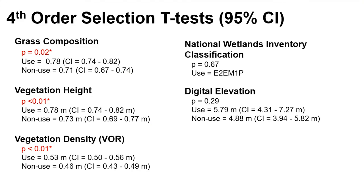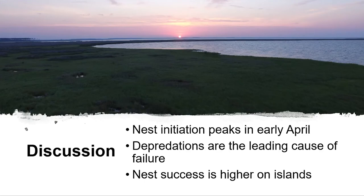For nest site selection, we found a significant difference in grass composition between use and non-use sites, with higher grass composition at nest sites. Vegetation height and density were also significantly higher at the nest. We found no significance in the other two factors. Nest initiation for black ducks peaks in early April, right when North Carolina conducts its helicopter surveys. Depredation is the leading cause of nest failure, and nest location and vegetation density were the biggest factors in nest success — with nest success higher on islands.